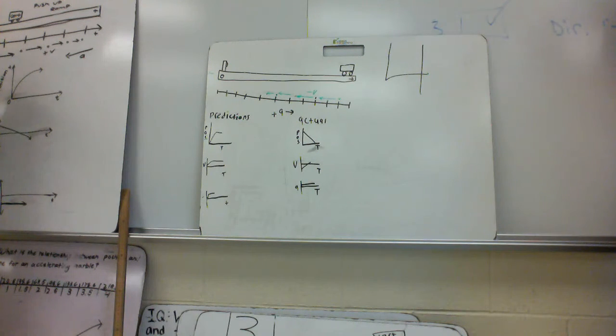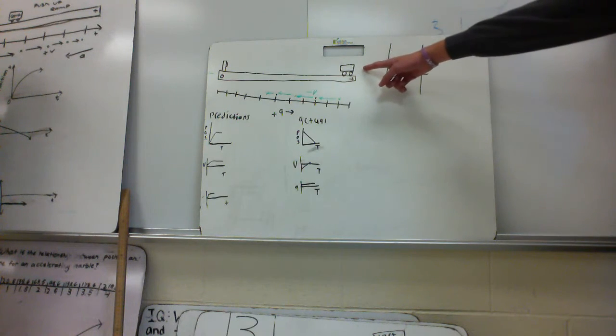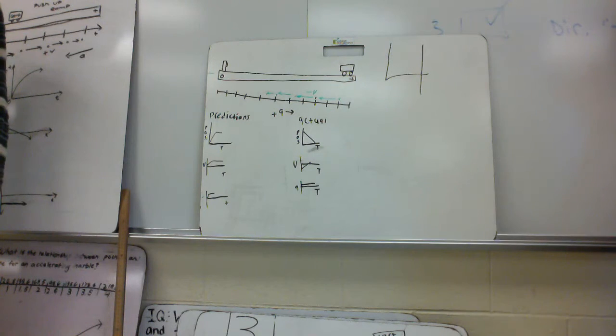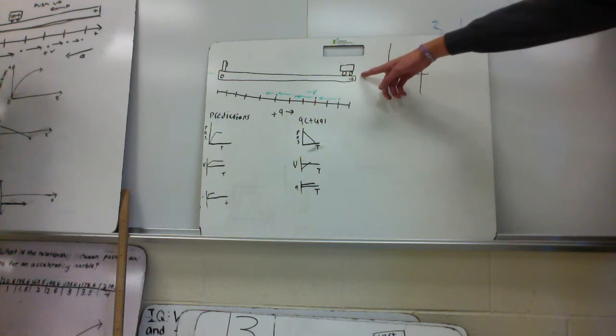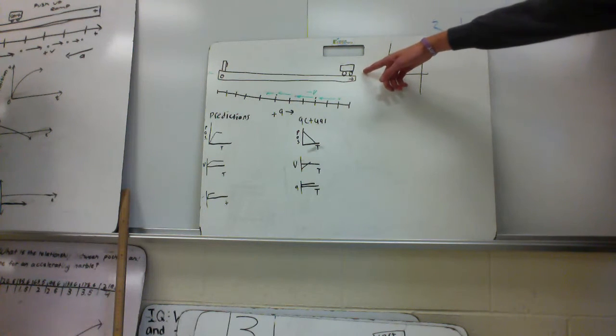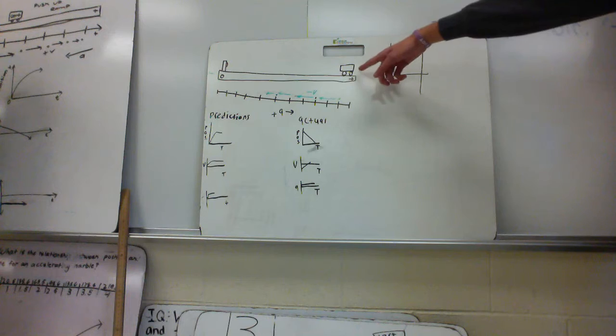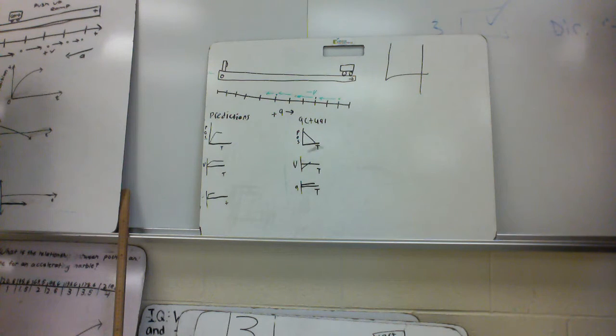And then for our prediction for the position versus time graph, we had it starting, or we had it for the position going up steeper and then getting flatter, because it was starting at the positive, and then pushing up fast, and then flattening up, so it was slowing down. And same thing for the acceleration and the velocity graph. For the prediction, we thought it would, for the acceleration, it would go up, or it would be steeper, because from the push, it would push it, or make it speed up, and then slow down.